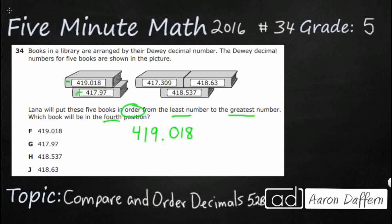And take this next one, make sure you line everything up neatly, 417.97. You notice it does not go to the thousandths spot. That is fine, we will deal with that in a moment.